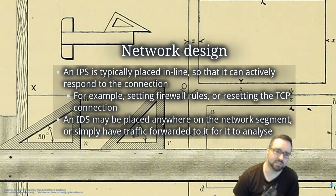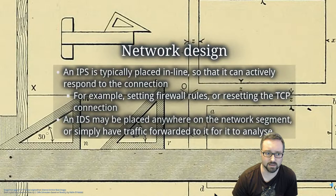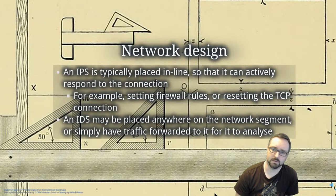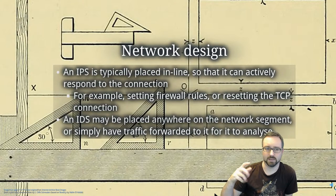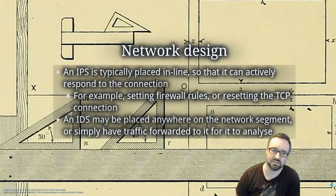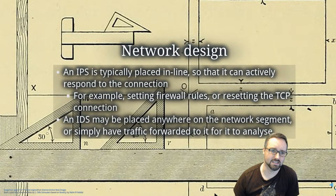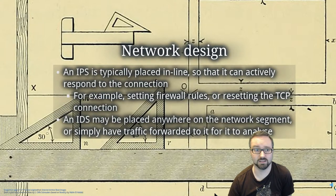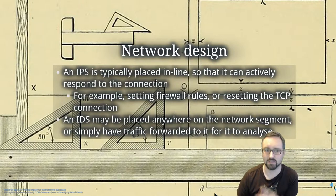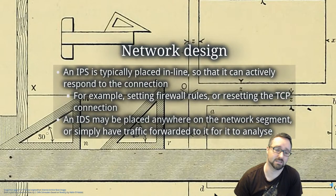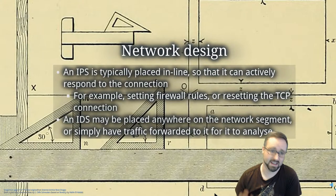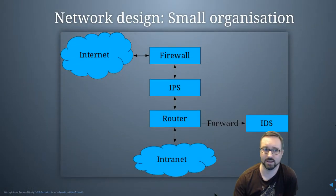The network design you implement will depend on your goal. An IPS is typically placed inline in the network so that traffic flows through it in order to get to its destination, allowing it to do something proactive — set firewall rules or reset connections. An IDS can be placed anywhere on a network, or even on a completely different segment with traffic forwarded to it. An IPS has to be positioned and processing quickly enough to actually act while events are happening.